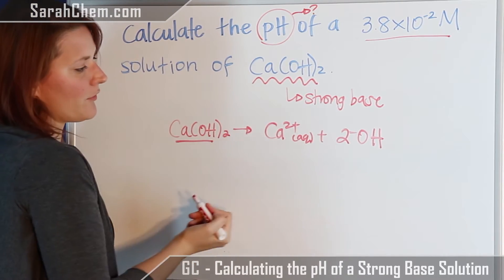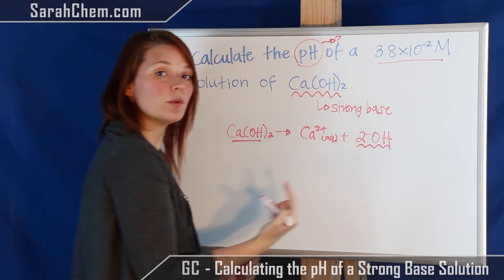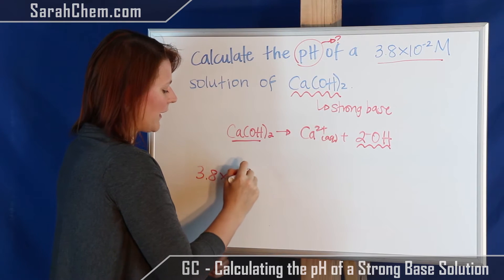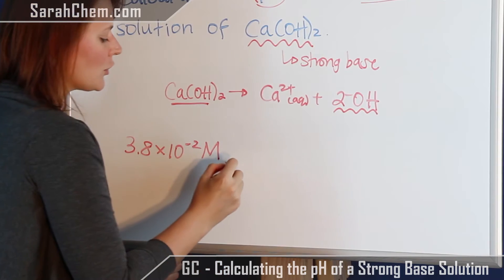That means for every one mole of this, we would get out two moles of that one. So what we're going to do then is we're going to take that 3.8 times 10 to the minus 2 molar, and we're going to do a mole ratio.